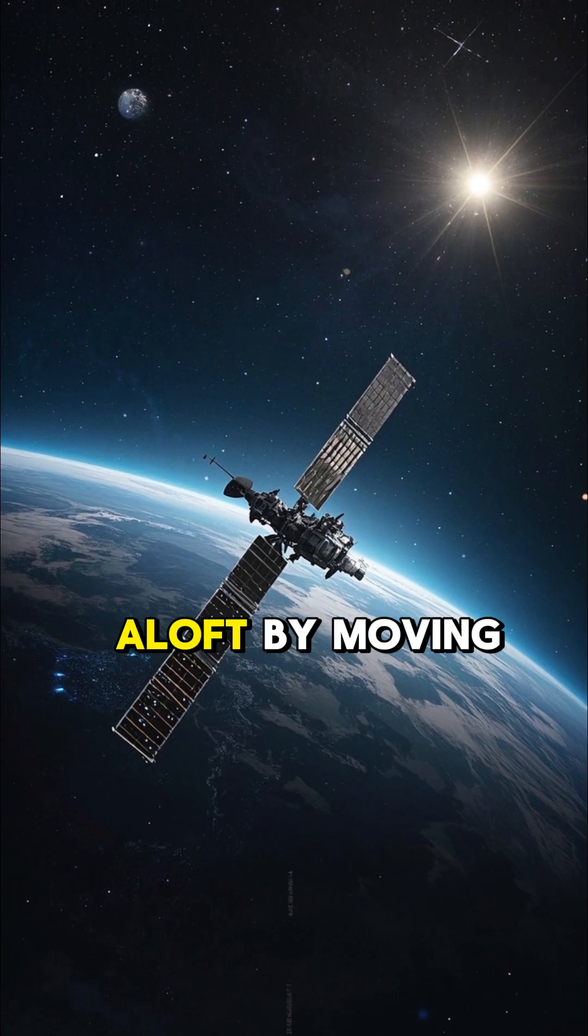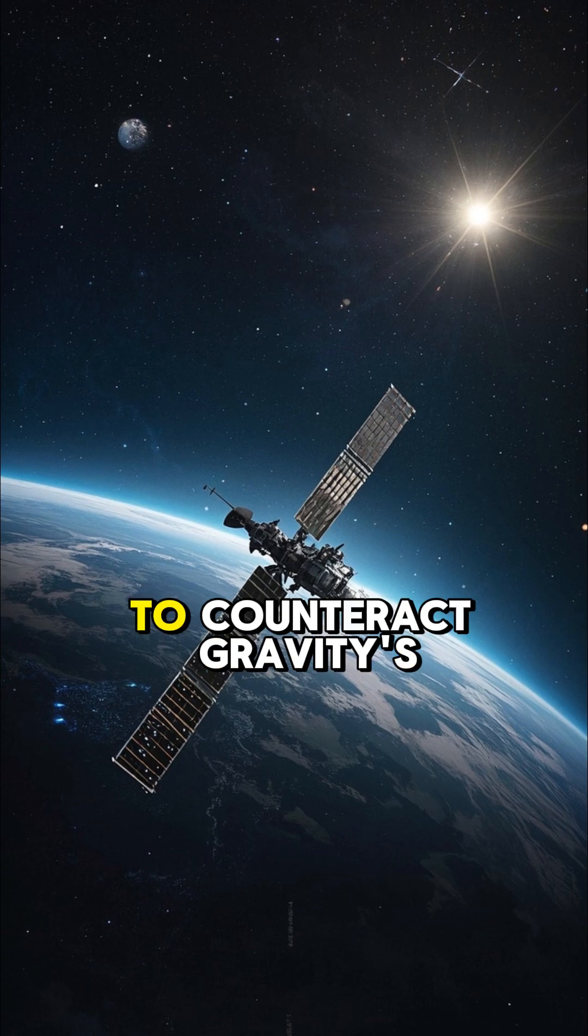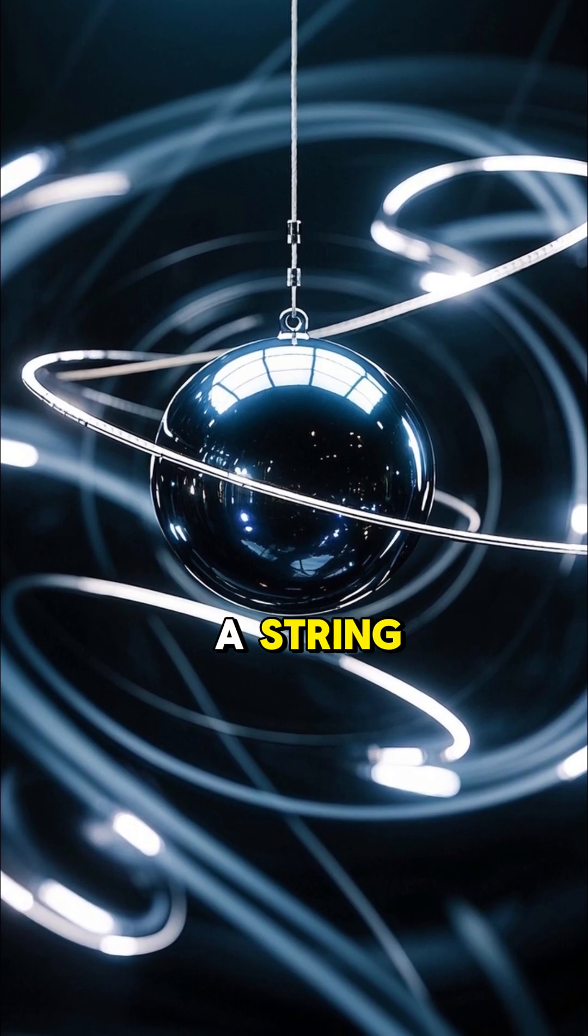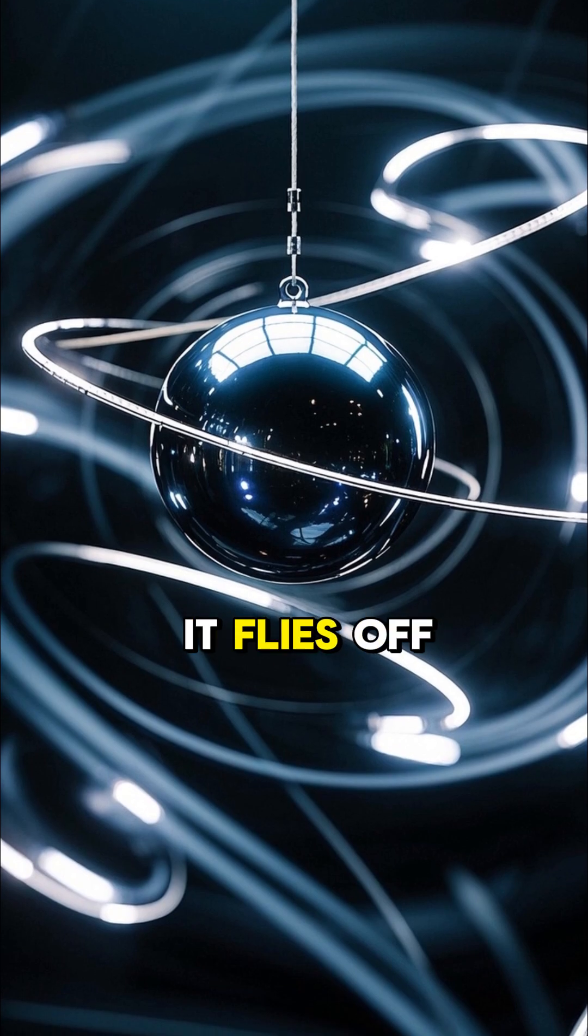So satellites stay aloft by moving fast enough sideways to counteract gravity's pull. It's like swinging a ball on a string. Let go, and it flies off.